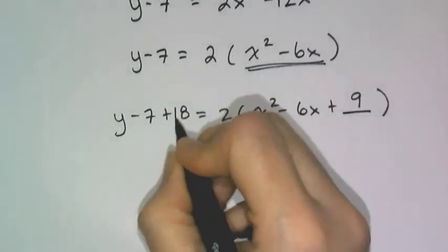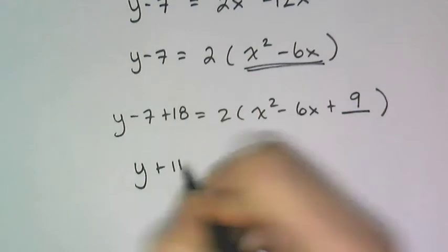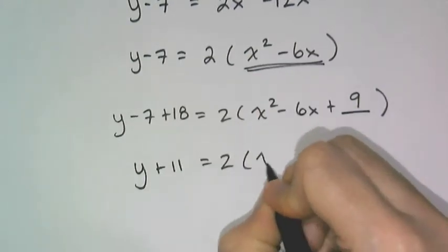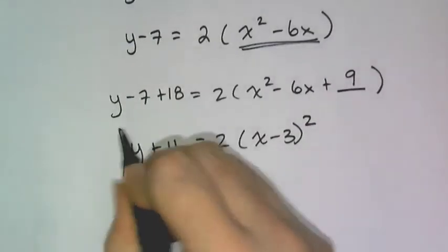And so then y minus 7 plus 18 is y plus 11. And this is equal to 2 times x minus 3 quantity squared. And if you remember, hey, hey, hey, this is vertex form.